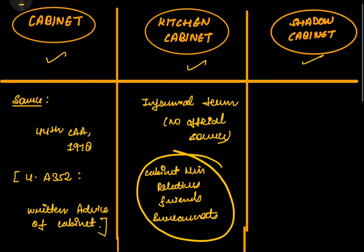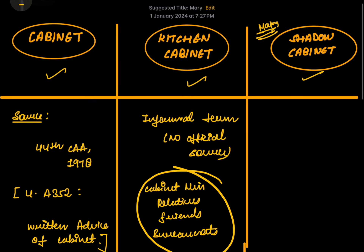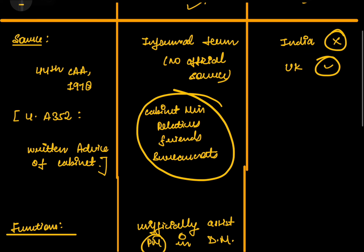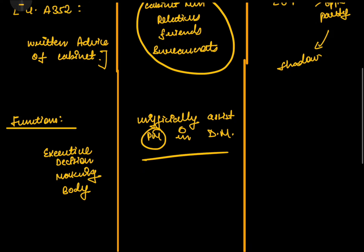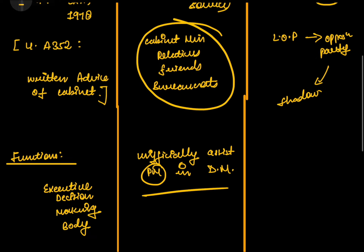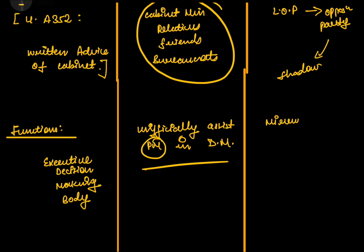Now we will see the shadow cabinet — this is important. India does not have the shadow cabinet system. It is a convention in the UK. The leader of the opposition appoints members from the opposition party into the shadow cabinet, and their function is to mirror the functioning of the cabinet.